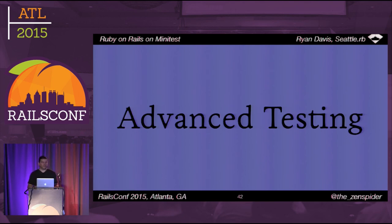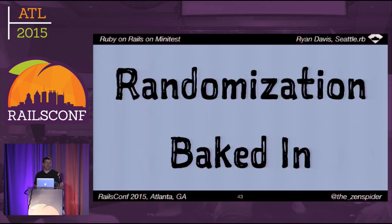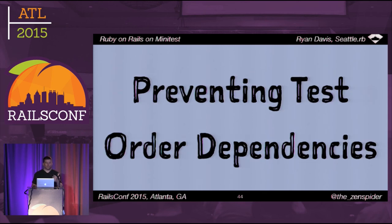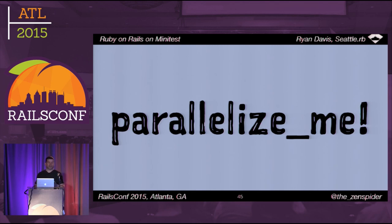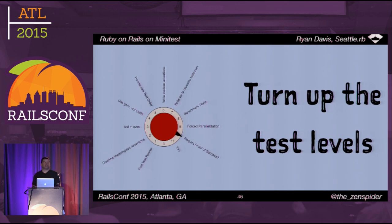Underneath Minitest::Test and Minitest::Spec is the infrastructure to run your tests in a way that promotes more advanced and robust testing. Minitest has randomization baked in and has always been on by default. It helps prevent test order dependencies and keeps your tests robust and working standalone. By rule, every single one of your tests should be able to run by itself and pass. There's also an opt-in system that lets you promote a test case to be parallelized, ensuring thread safety in your libraries and absolute robustness.